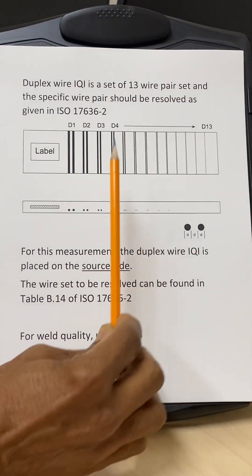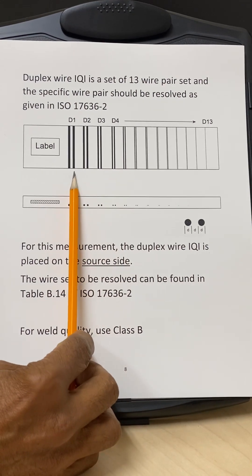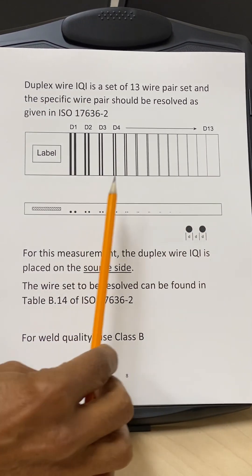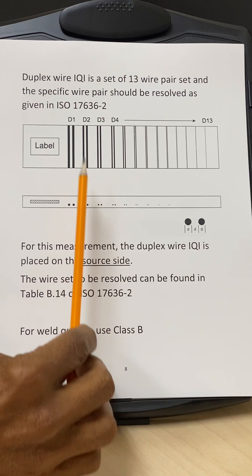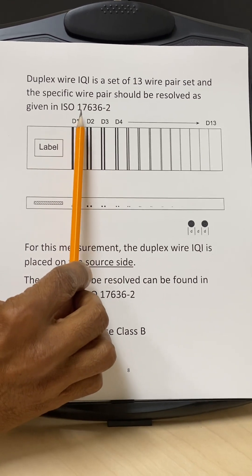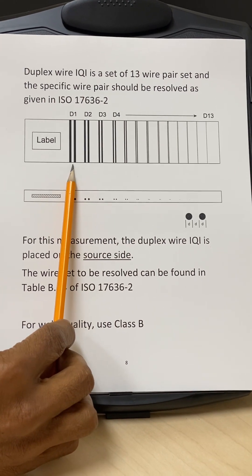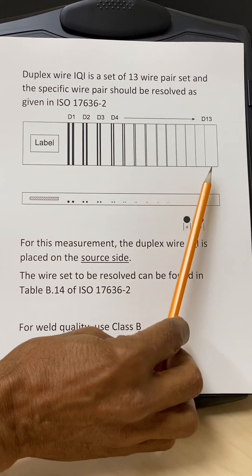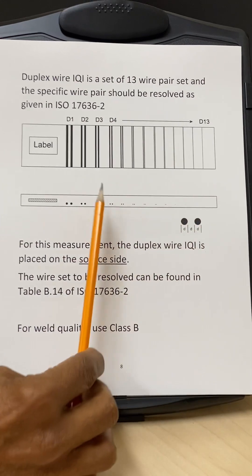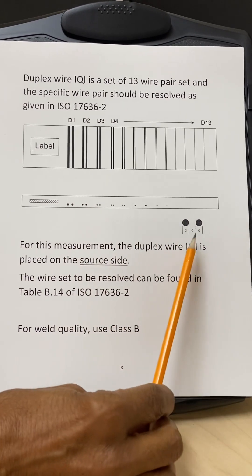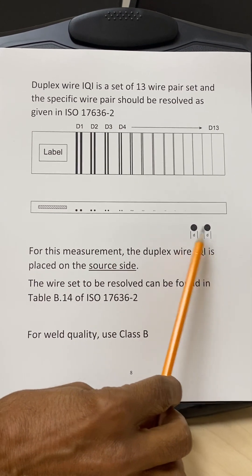And which are like D1, which are the bigger wires, to D13. And in this case, they are actually defined in ISO 17636-2. D1 being the biggest wires and D13 are the finest wires. And the spacing between the wires is the same as the diameter of the wires.